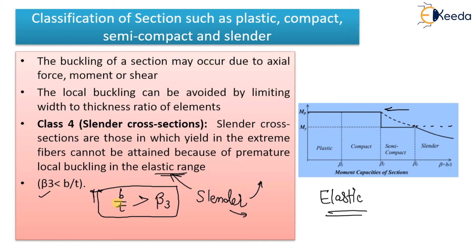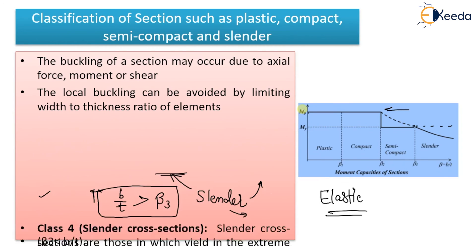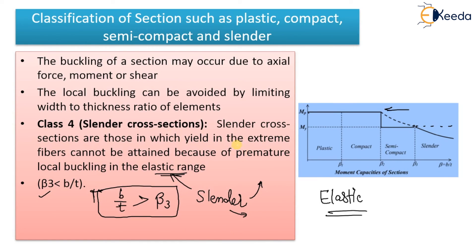So there are four types of sections: plastic, compact, semi-compact, and slender. In plastic sections, there is full rotation and full plastic moment generation. In compact sections, full plastic moment is generated but rotation is restricted. In semi-compact sections, local buckling limits the moment to only the yield moment. In slender sections, premature local buckling occurs in the elastic zone, and the section never reaches the yield moment. This is the classification of sections. Thank you.